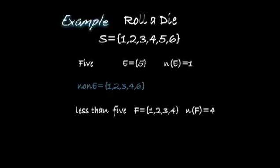Consider the experiment of rolling a die. There are 6 possible outcomes, 1 through 6. The event of rolling a 5 corresponds to the outcome that is just the 5, and there is one outcome in event E. The complement of rolling a 5 are the outcomes 1, 2, 3, 4, and 6 — all the outcomes that are not in E but are still in the sample space. There are 5 possible outcomes in the complement.